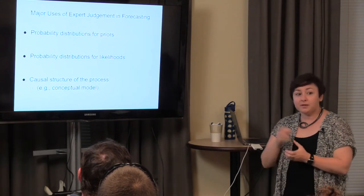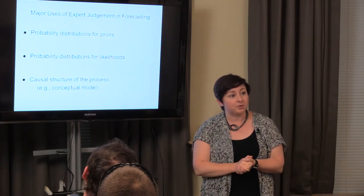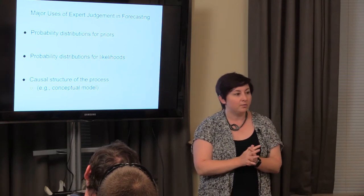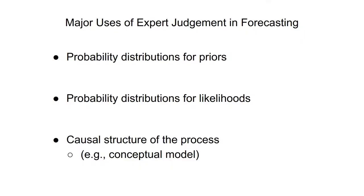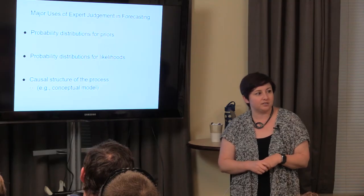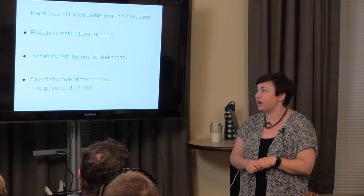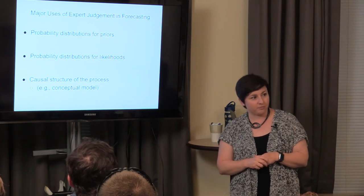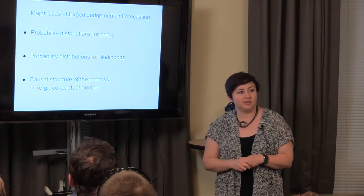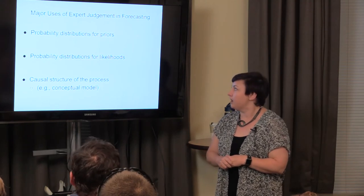The three major ways expert elicitation is particularly useful within forecasting: First, we don't need to use uninformative priors. There are many cases where we have existing knowledge and can construct an informative prior. Even your own expert judgment, introduced into modeling contexts in a formalized way, can be a really powerful way of including it within Bayesian forecasting approaches.